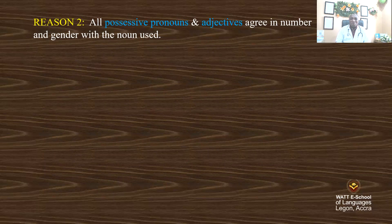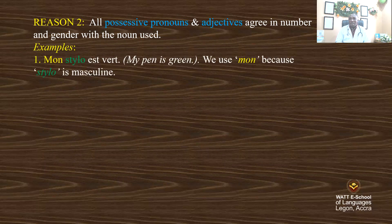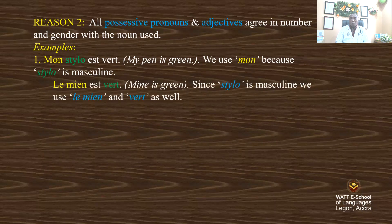All possessive pronouns and adjectives agree in number and gender with the noun used. Example: 'Mon stylo est vert' — my pen is green. We use 'mon' because stylo is masculine, so 'mon' is a possessive adjective here. 'Le mien est vert' — that is the possessive pronoun, replacing 'mon stylo'. Mine is green. Since stylo is masculine, you use 'le mien' and 'vert'.